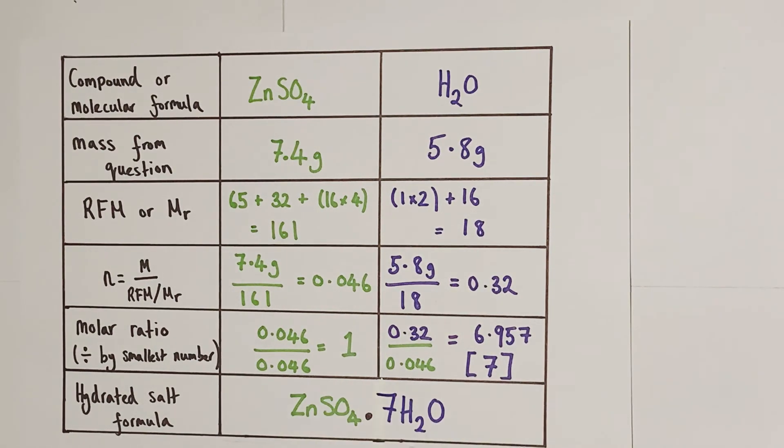That means we now know the formula of the hydrate. It is ZnSO4·7H2O. For every one zinc sulfate formula unit you're going to have seven moles of water present. So there you have it, using empirical formula grid method to solve a hydrated salt calculation problem.